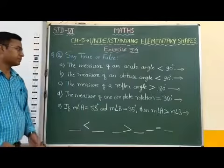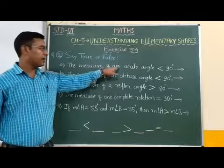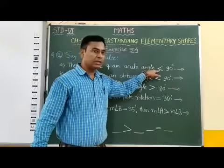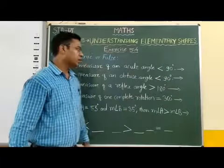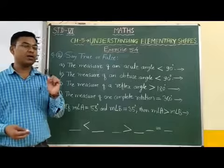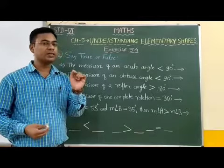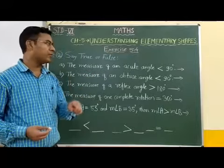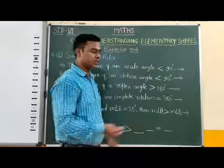First statement: the measure of an acute angle is less than 90 degrees. We know that the measure of any acute angle is always less than 90 degrees. Therefore, we can say that this statement is true.